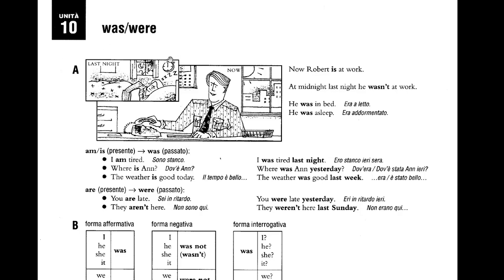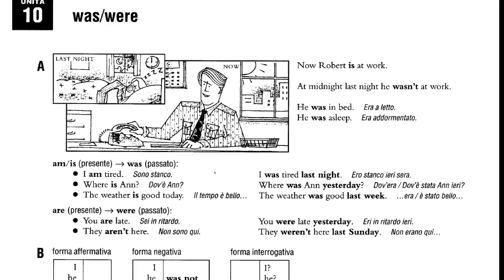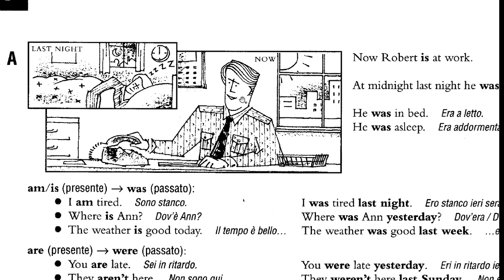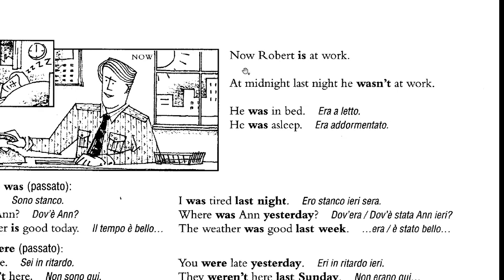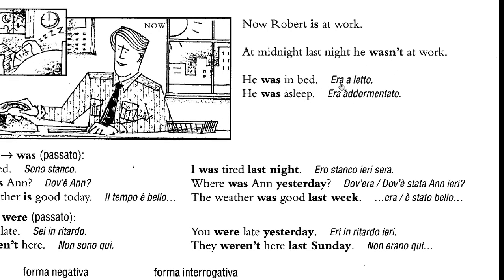If you take a look at this picture, you can see there is a man sleeping — it says 'last night'. And in the other one you can see this man sitting at his desk, answering the phone. It says 'now Robert is at work', and then it says 'at midnight last night he wasn't at work' — so he wasn't. He was in bed, 'era letto'; he was asleep, 'era addormentato'.